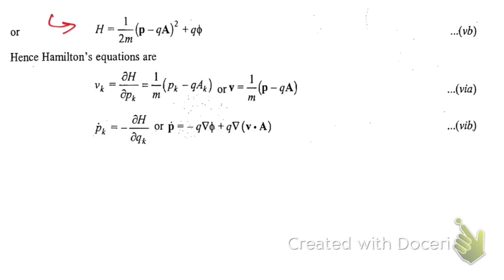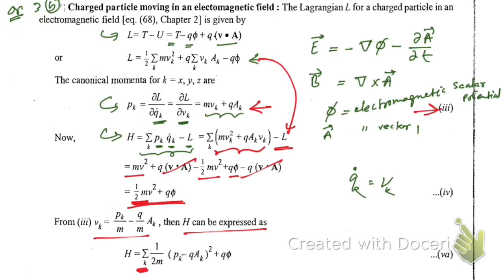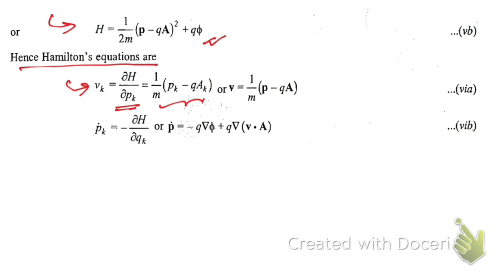Hence H can be expressed - Hamiltonian can be expressed - now instead of vk you can replace vk by this term. If you write this using summation again, in this term this v square here we have written pk minus q ak whole square, and m is taken common outside. Hope you have understood this. If you write in vector form, then we don't need this summation, so now we have got this one. Hence the Hamiltonian equations are vk equals del H by del pk, which is equal to this one. And pk dot is equal to this. These are the Hamiltonian equations of motion.